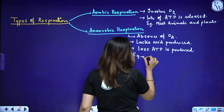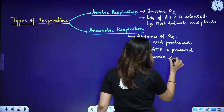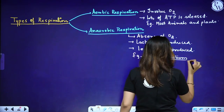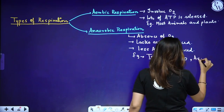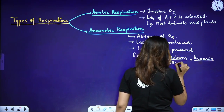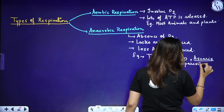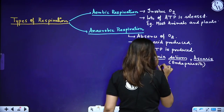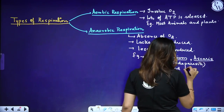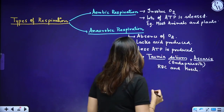For example, Taenia solium — the tapeworm — and Ascaris are endoparasites. Other examples include RBCs (red blood cells), and it also happens in muscles sometimes. So all these are examples of anaerobic respiration. Ultimately, in all cases, energy is produced.